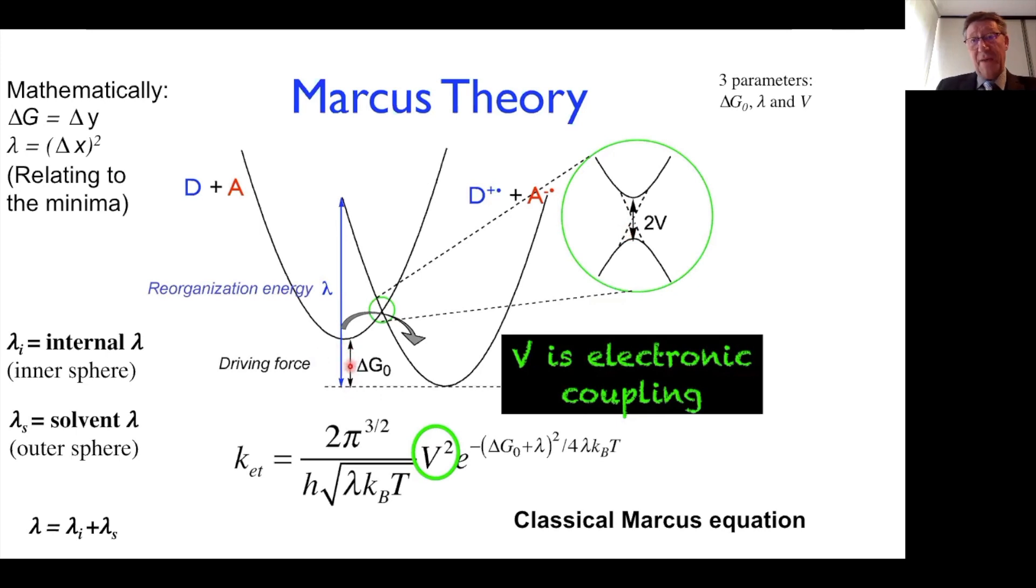Delta G is the driving force of the reaction. How exergonic is it? What is the energy difference between the donor and acceptor in their neutral state and the charge transfer state, in which we have formed the radical cation of the donor and the radical anion of the acceptor? This should be lower. Mathematically, the delta G is just the delta Y value, the Y difference between these two minima.